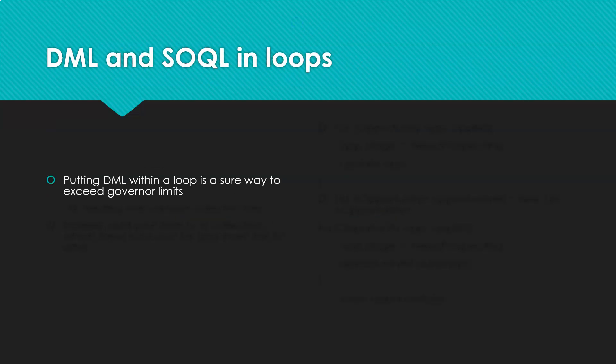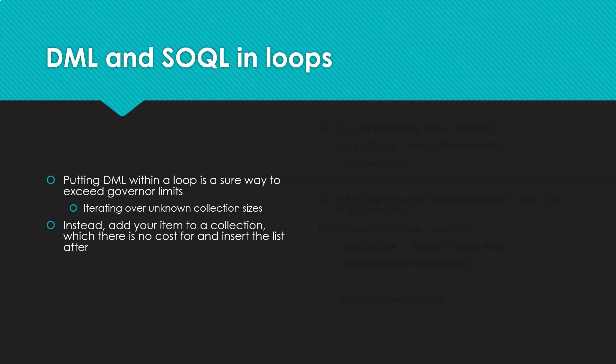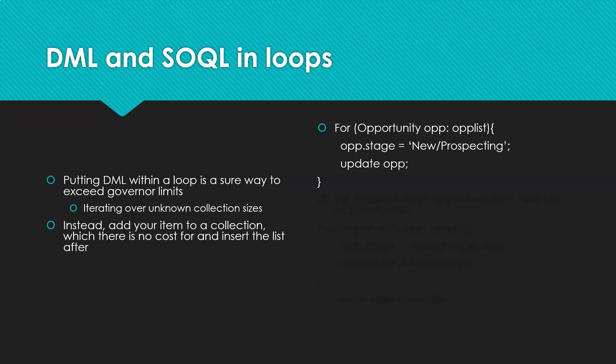Putting DML within a loop is a sure way to exceed your governor limits because you're iterating over an unknown collection size. Unless you know you're only going to iterate over something 10 or 20 times, I would still avoid it. Instead, a best practice would be to add your item to a collection — there is no cost for that — and insert the list after. This is specifically for DML, so let's take a look at some code.